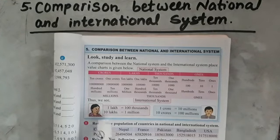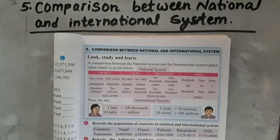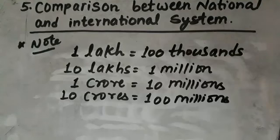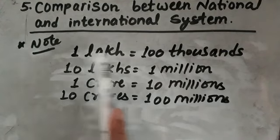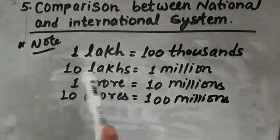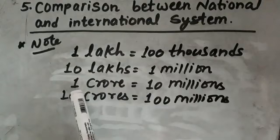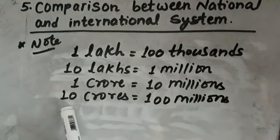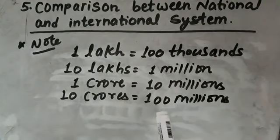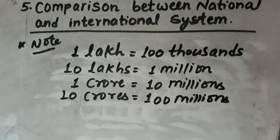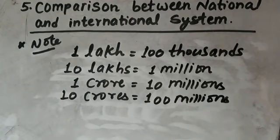Let me write these things on the board once more. One lakh is equal to hundred thousand. Ten lakh is equal to 1 million. One crore is equal to 10 million. And similarly, 10 crore is equal to 100 millions. Hope you will keep these things in your mind.